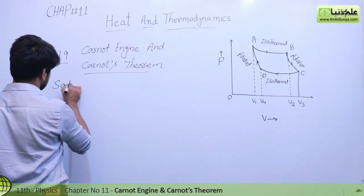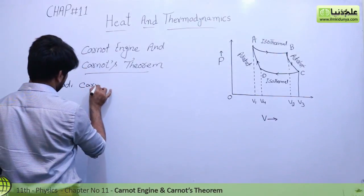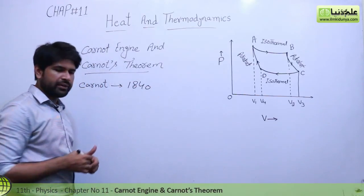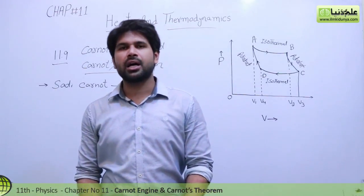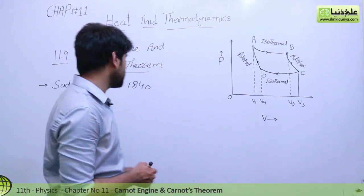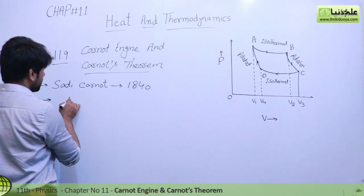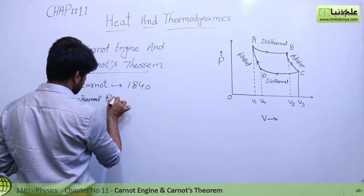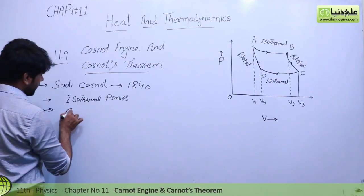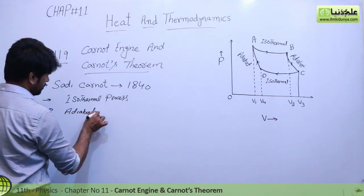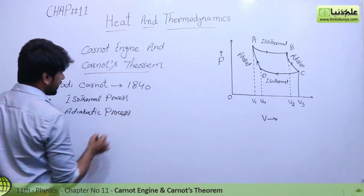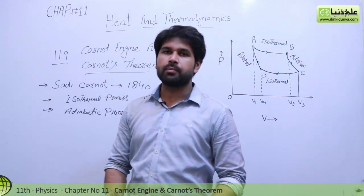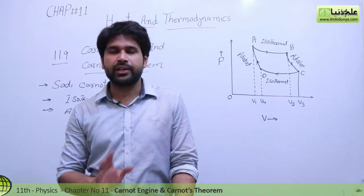In 1840, Carnot described this ideal heat engine, which was based on two processes. The first process is the isothermal process, and the second process was the adiabatic process. He described this ideal engine which was based on these two processes.